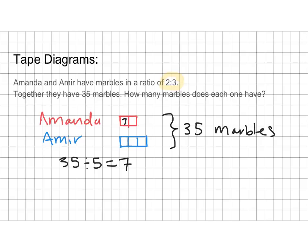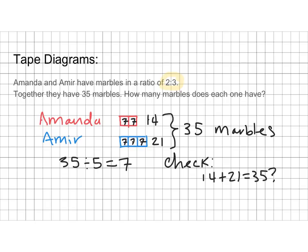Amanda has two groups of seven marbles and Amir has three groups of seven marbles. So Amanda has a total of 14 and Amir has a total of 21. We check our work: does 14 plus 21 equal 35? It sure does — we got it!